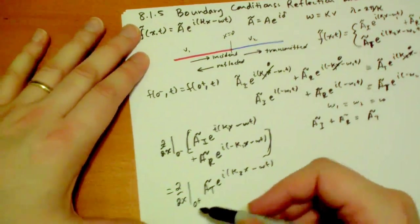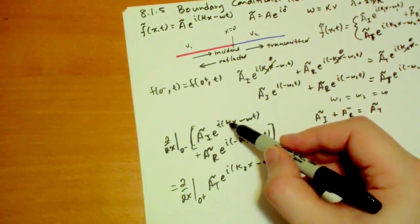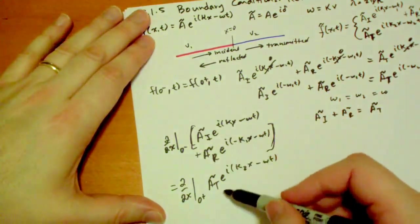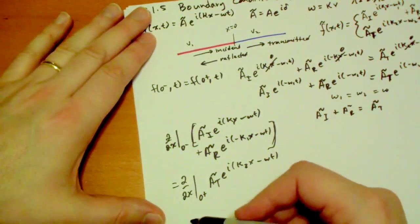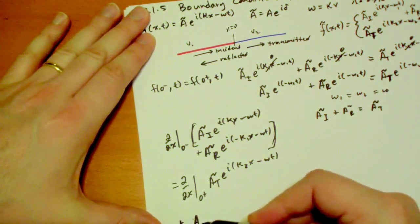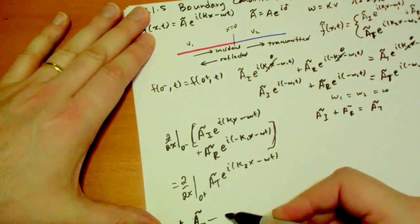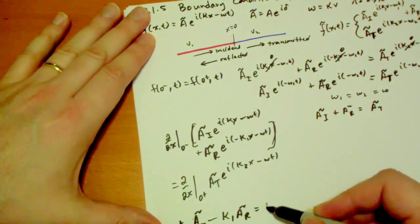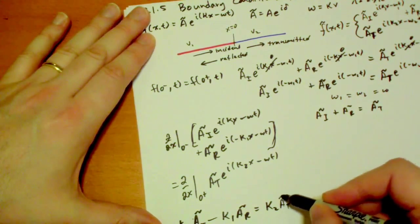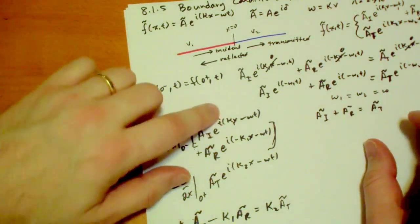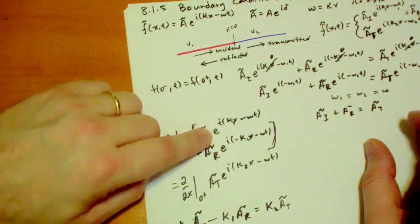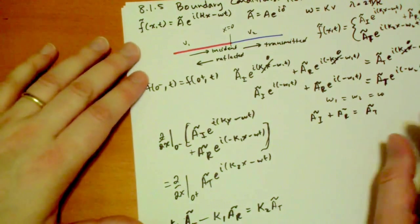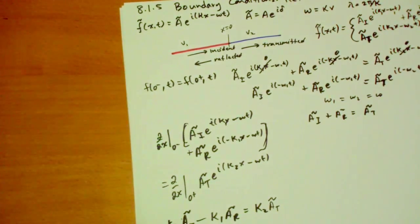And running this is rather simple. The derivative with respect to x brings the k's down. This case it's k1. This case it's negative k, and i comes down too of course, but we're going to cancel that out. So we end up with kappa 1 a incident minus kappa 1 a reflected has to equal kappa 2 a transmitted. We're substituting in 0, so the right side is e to the i minus omega t. In all cases we just factor that out.